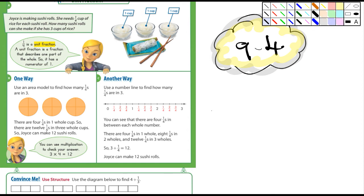Look at this first example here. This gal's making sushi rolls and she needs a quarter cup of rice for each sushi roll. It says how many sushi rolls can she make if she has three cups of rice.